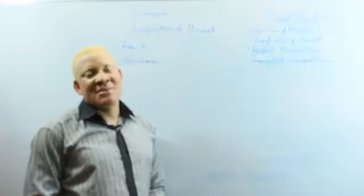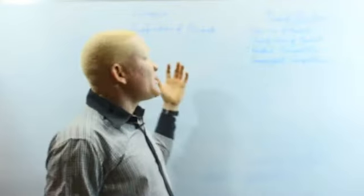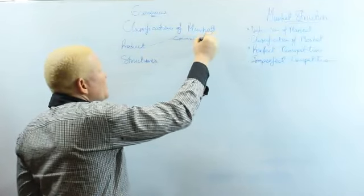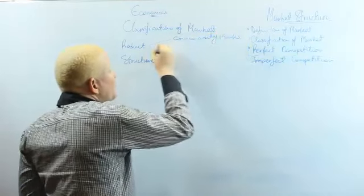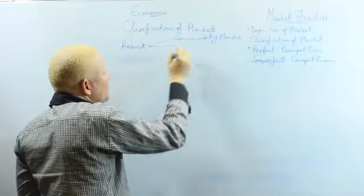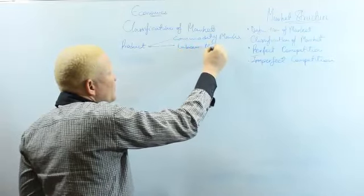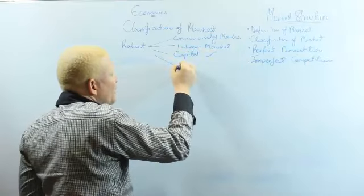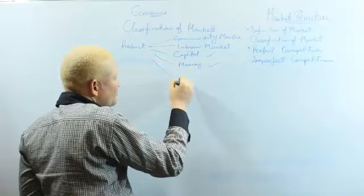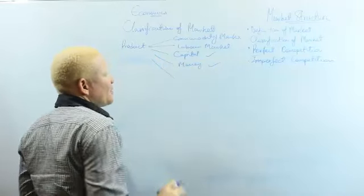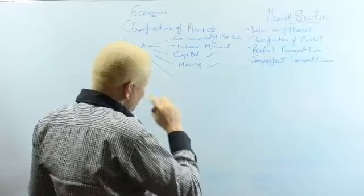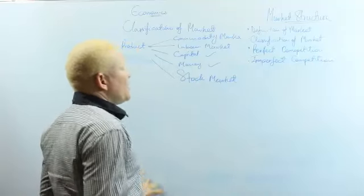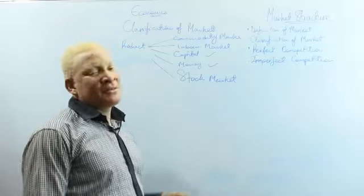We are looking at markets being classified according to the items being sold, which is the products. According to products, we could have commodity markets, labor markets, capital markets, money markets, financial markets, and the stock market. All these are types of markets classified according to the products.